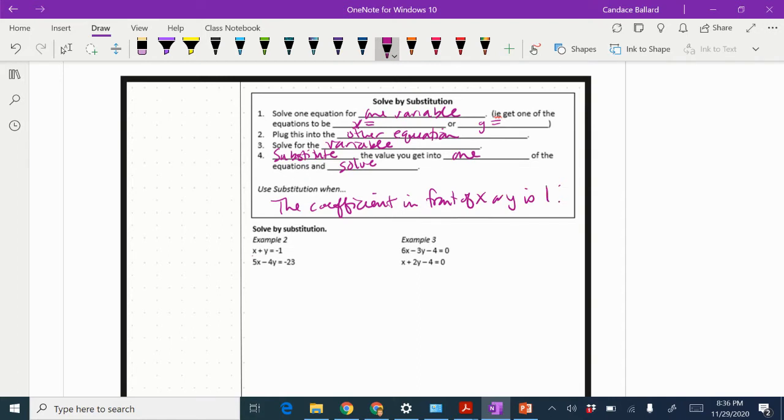So let's try a couple of these. The first one I'm going to do is example 2. Doesn't matter if I solve for x or solve for y, but I'm going to choose to solve for x. So I'm going to move y to the other side by subtracting it. So I get x equals negative y minus 1.